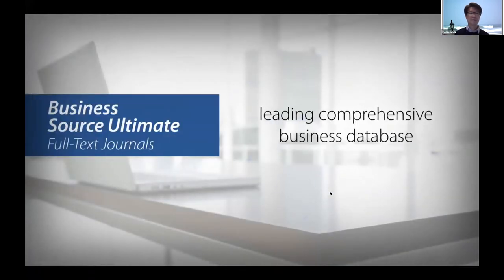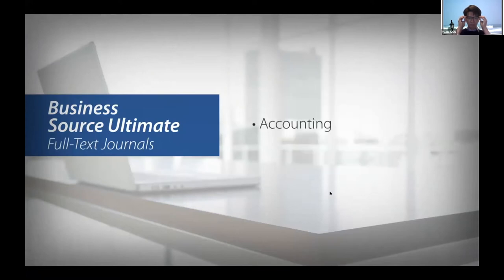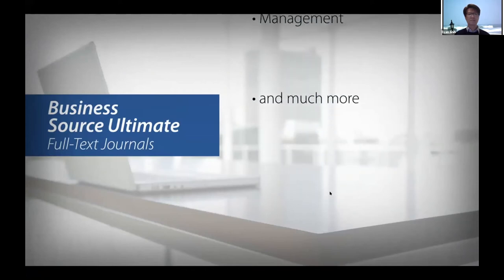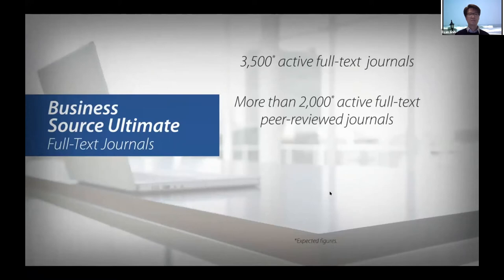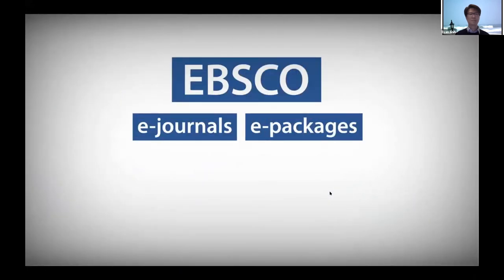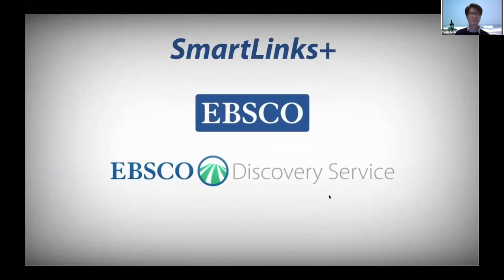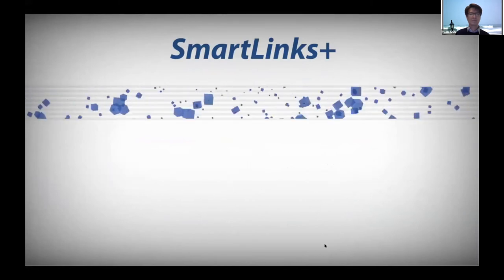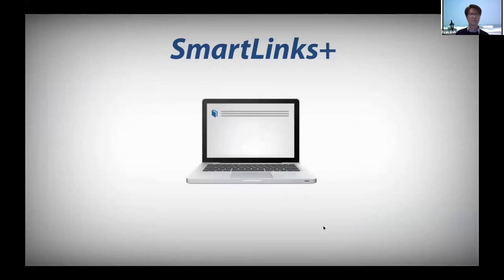Business Source Ultimate, the leading comprehensive business database, provides an unprecedented wealth of peer-reviewed, full-text journals and other resources covering topics such as accounting, finance, banking, marketing, management, and much more. Sources include more than 3,500 active full-text journals and more than 2,000 active full-text peer-reviewed journals, and a unique company view feature providing detailed company information on finances, subsidiaries, products, and more for over 1 million of the world's largest public and private companies. With Smart Links Plus, users get instant one-click access to full text, with continuous availability checks to ensure content is found immediately in a single result list.